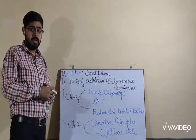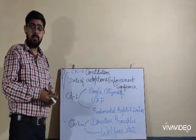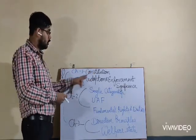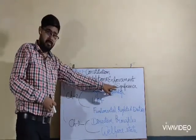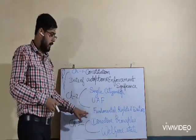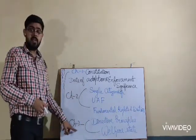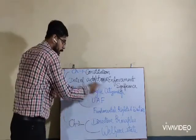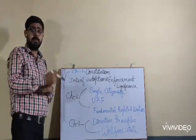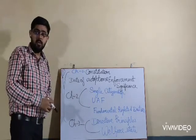Today we have covered these topics in our video class. Let me tell you where you will find these topics in your book: definition of Constitution, date of adoption, enforcement, and its significance are in chapter one. Single citizenship, universal adult franchise, fundamental rights and duties are in chapter two. Directive principles and welfare state are in chapter three. But all these points and topics are considered as chapter one — Our Constitution — as prescribed by ICSE for session 2020-21 for class 9. Thank you and have a nice day.